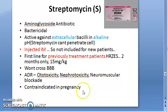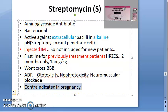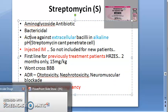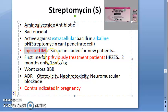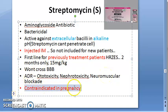Summary of streptomycin: five key points — (1) effective against extracellular bacilli; (2) works in alkaline pH; (3) administered by IM injection; (4) given to previously treated patients only; (5) contraindicated in pregnancy.